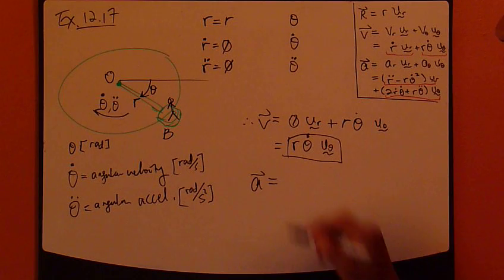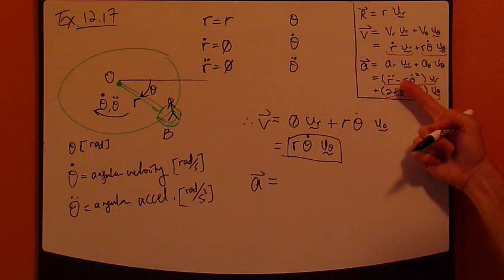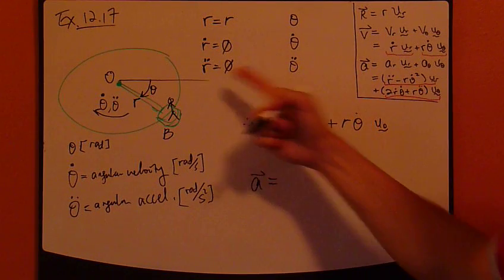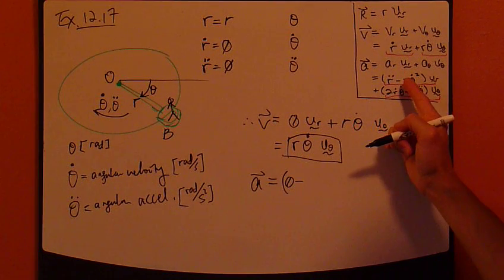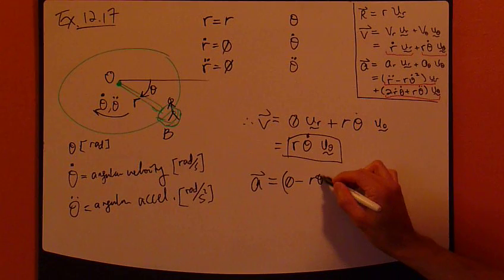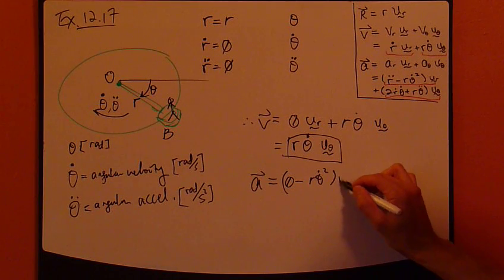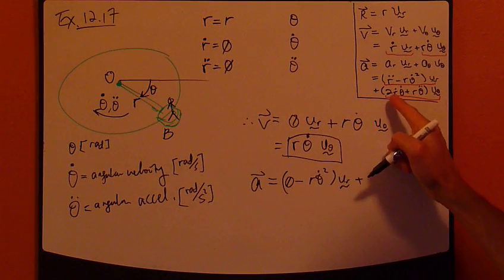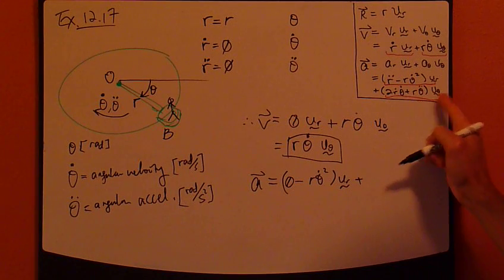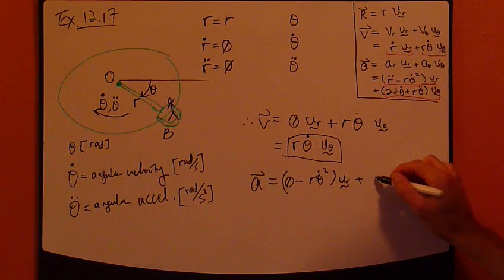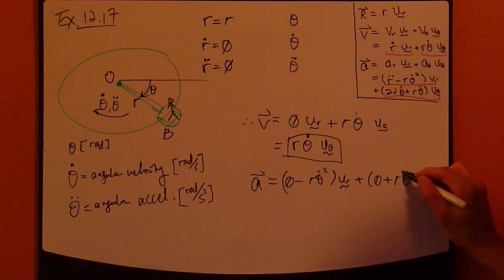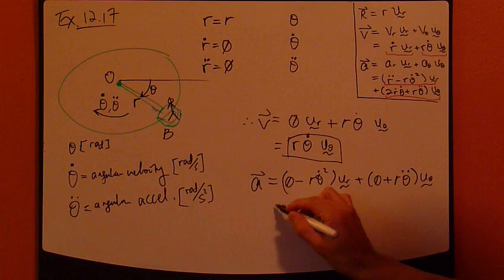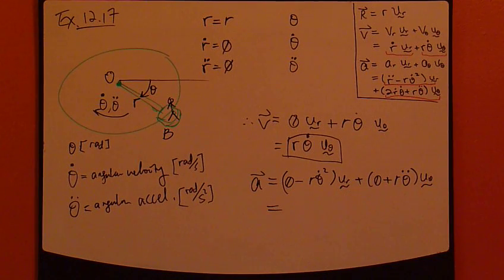What about acceleration vector? Same thing here. Let's talk to you then. r double dot, first term, is zero. Minus r is r, theta dot square, that's fine. Keep that, u_r. Second term. Theta direction. This r dot is zero, plus r is r. Keep that, u_theta.